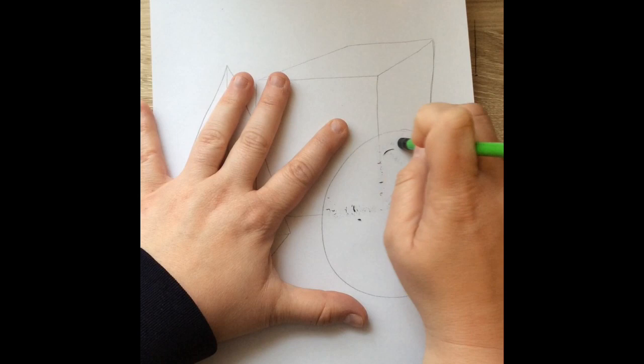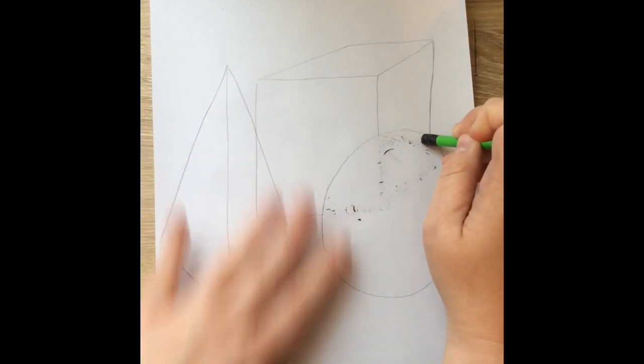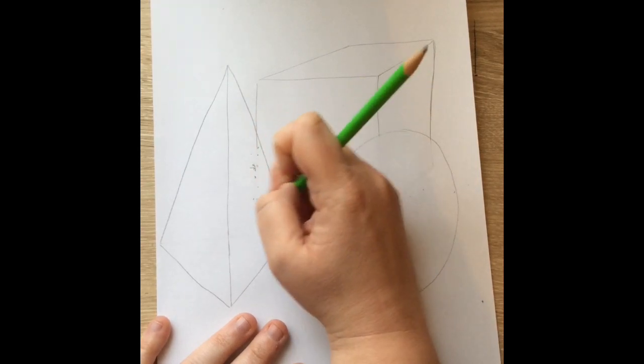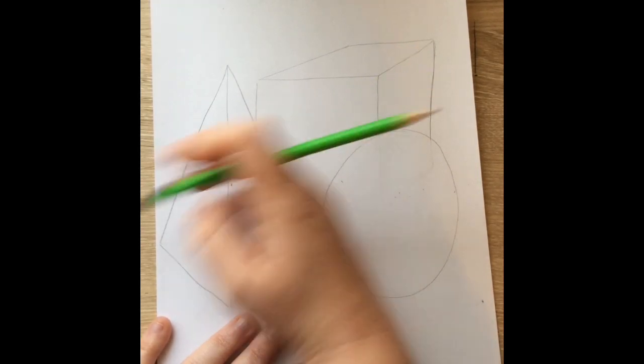Now remember, because we are overlapping things, we want to make sure that we're drawing light, and then we erase once we get to those sections that are overlapped with the other shapes.